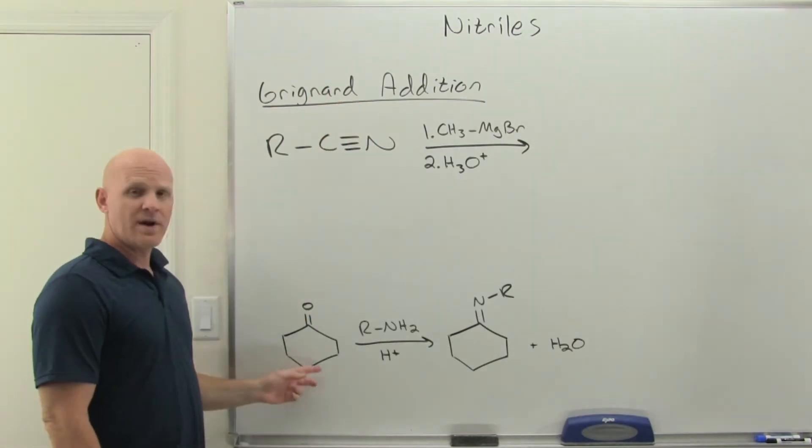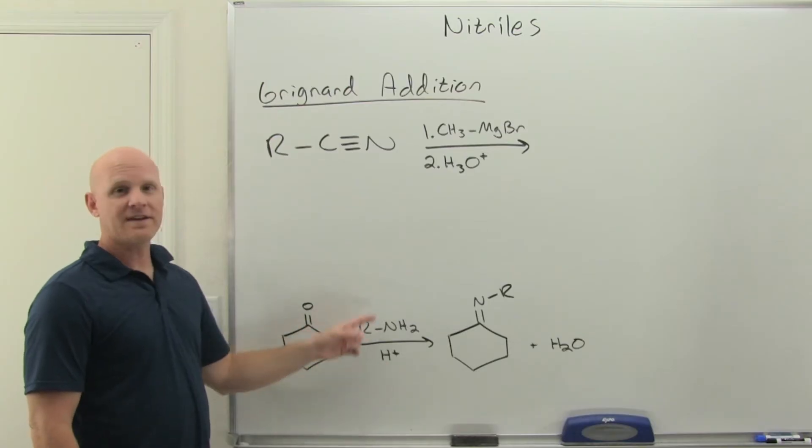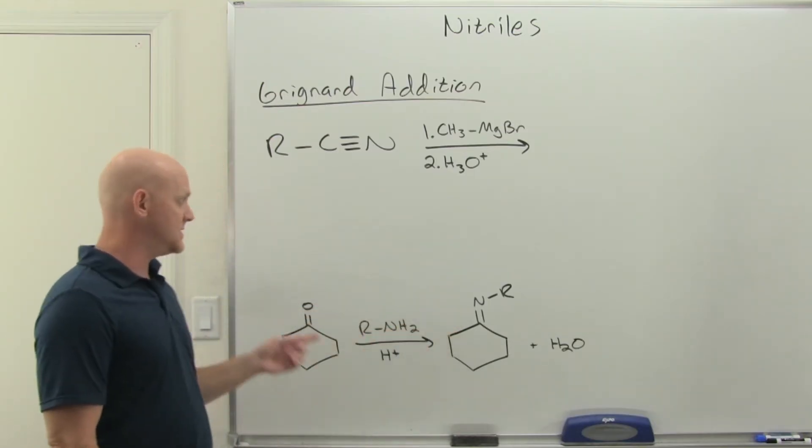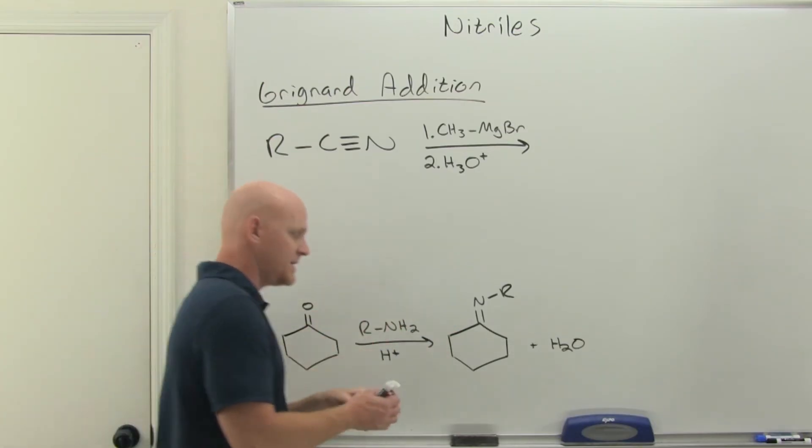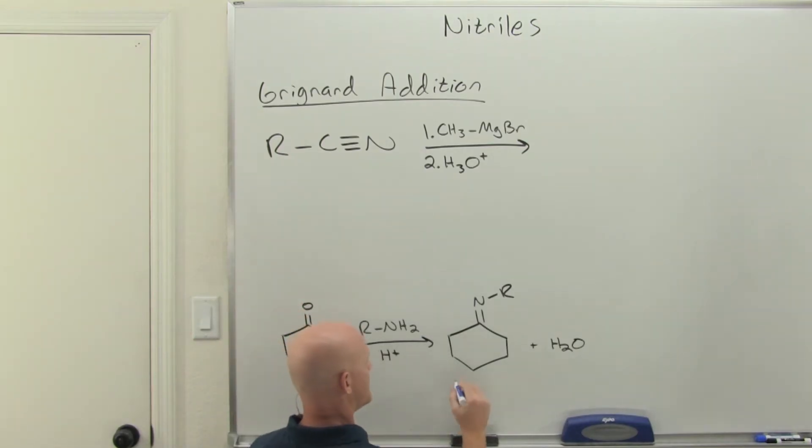We learned that with a ketone or aldehyde, if you add a primary amine with your acid catalyst, you can form an imine. You turn that carbon-oxygen double bond into a carbon-nitrogen double bond, and we call that an imine or a Schiff base, and then water is your byproduct.